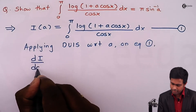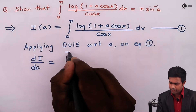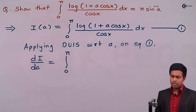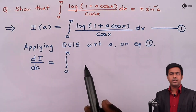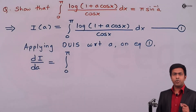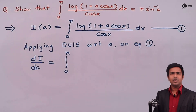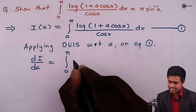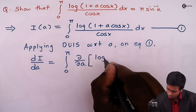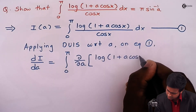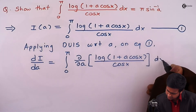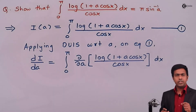By applying the DUIS rule, we get dI/da equal to the integral from 0 to π. By the rule of DUIS we find the differentiation of the function under the integral sign, but this differentiation is a partial differentiation. So here we find the partial differentiation of log(1 + a·cos x)/cos x with respect to a, written as ∂/∂a of [log(1 + a·cos x)/cos x] dx.